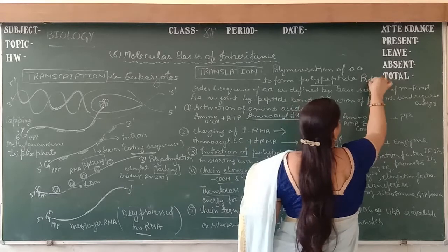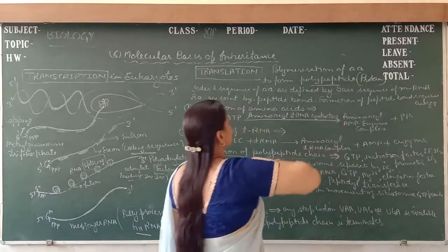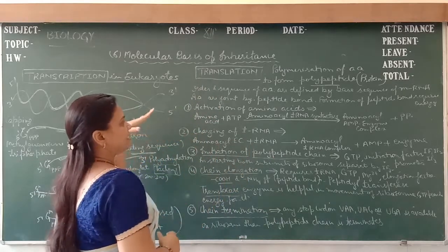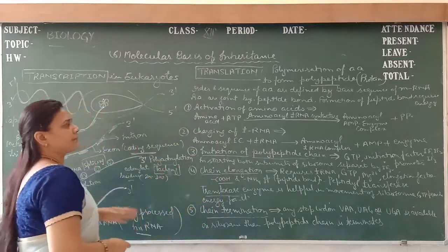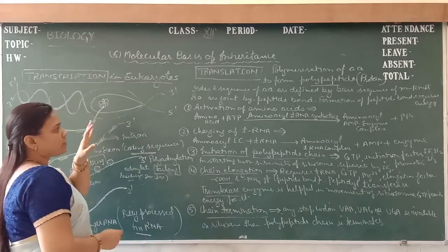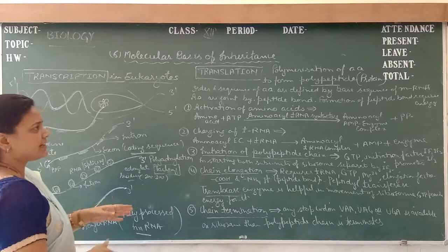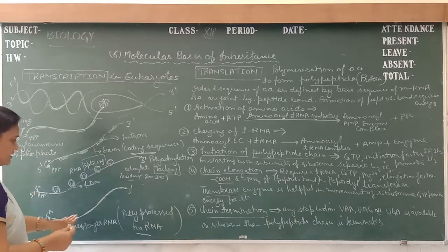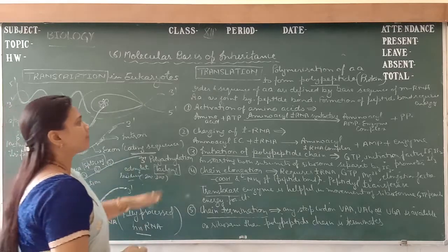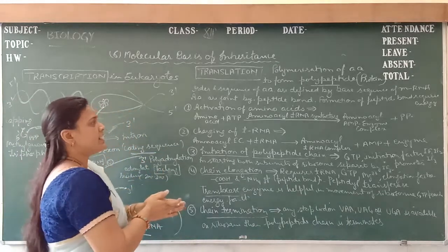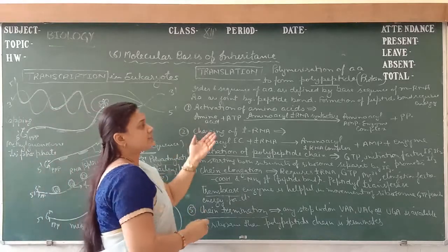Polypeptide is protein. Proteins are the polymers of amino acids. During this process, all the amino acids are arranged in a particular sequence and they are bonded by the peptide bond, forming a specific protein. The order and sequence of amino acids are defined by the base sequence present inside the messenger RNA. Amino acids are joined by the peptide bond, and formation of the peptide bond requires energy.